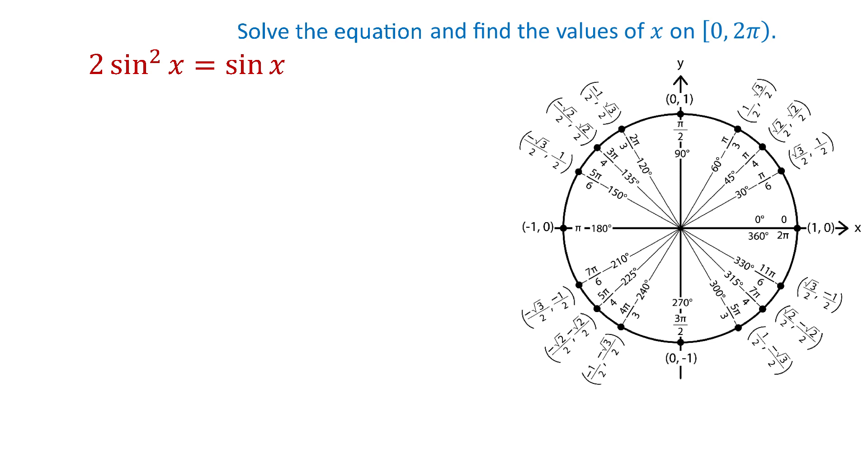Now notice that in this equation on the left side we have sine squared of x and on the right side sine of x. So to solve it we will use factoring. And we will start by moving sine of x to the left. So we will have 2 sine squared of x minus sine of x equals 0.